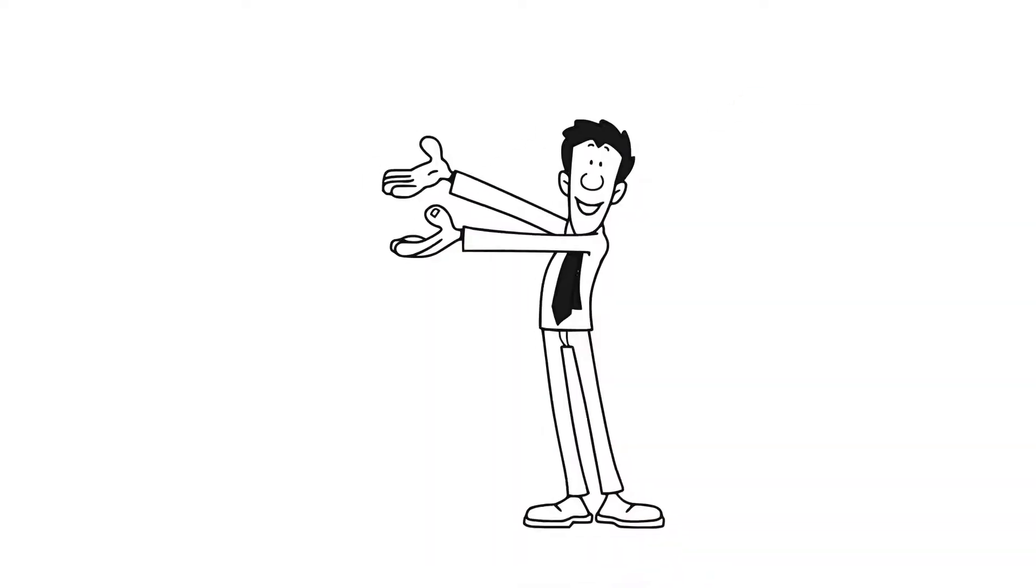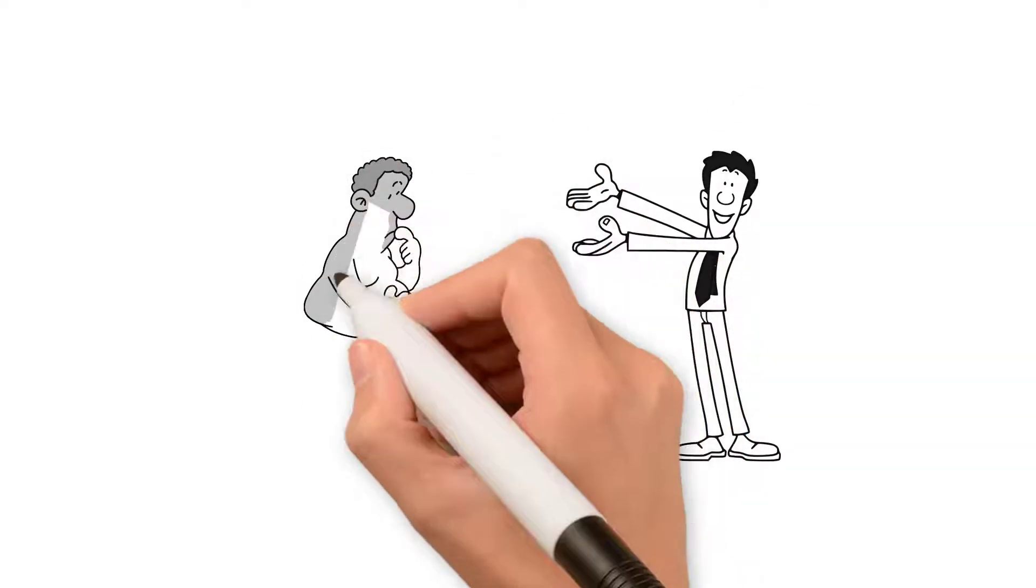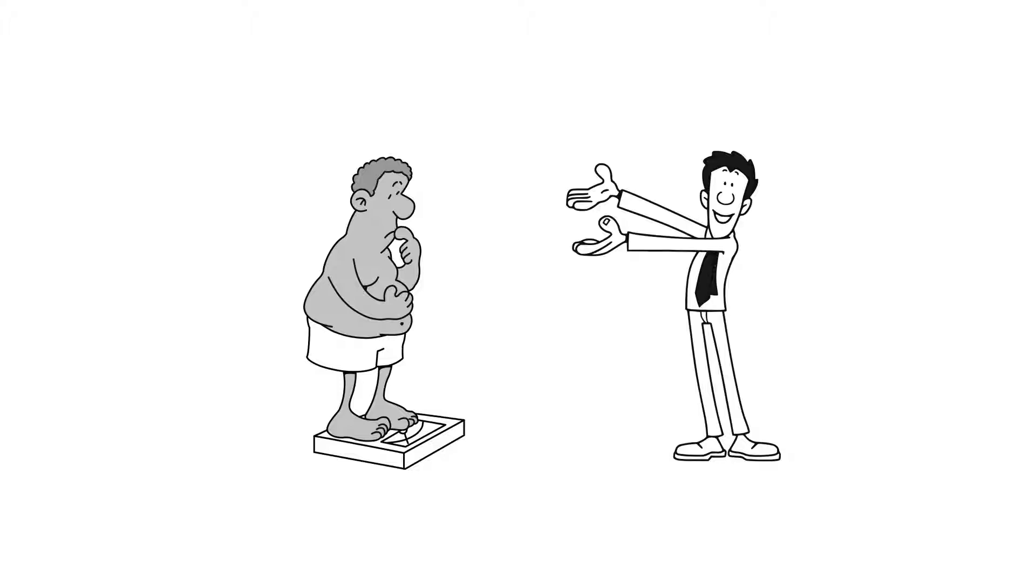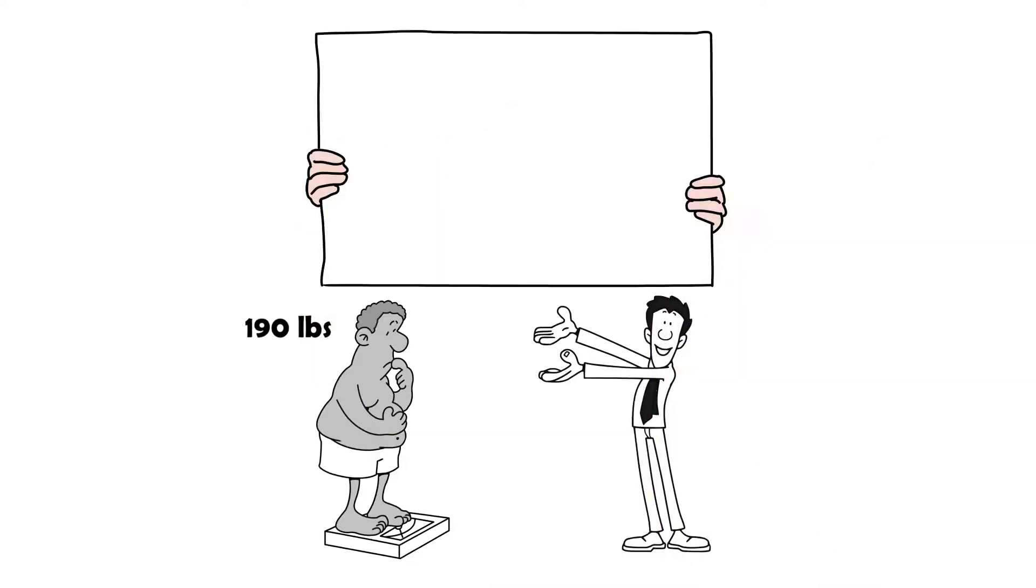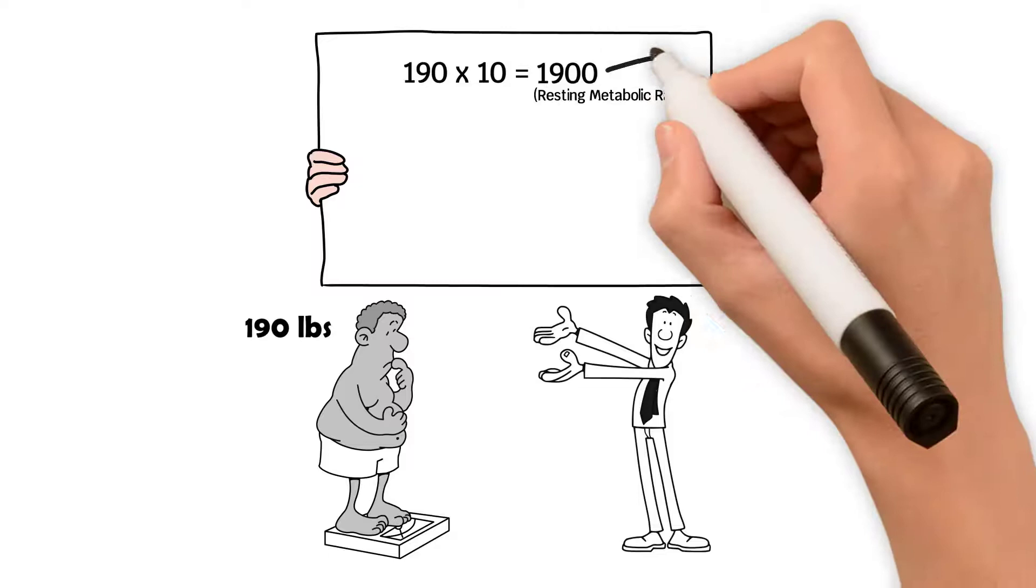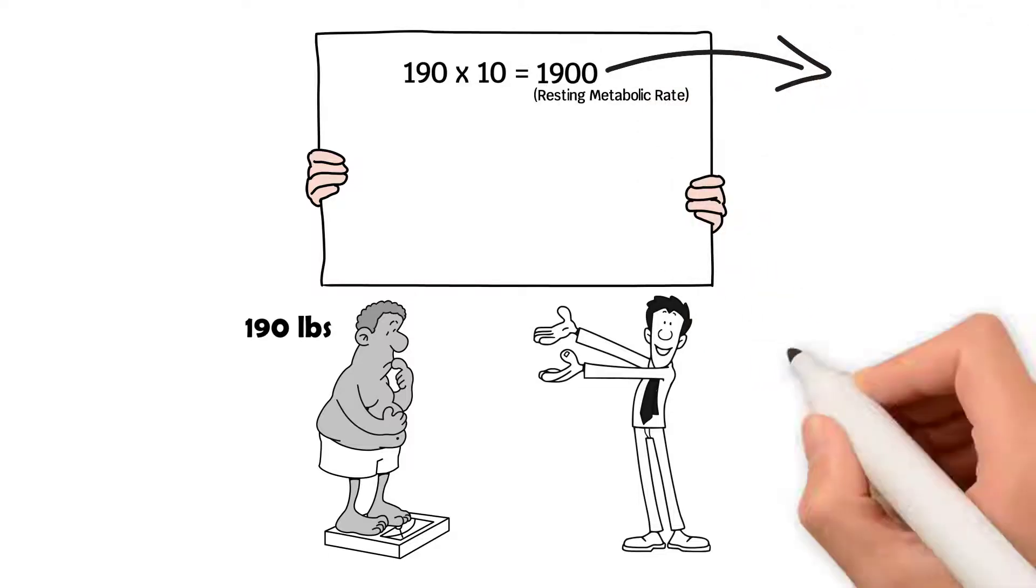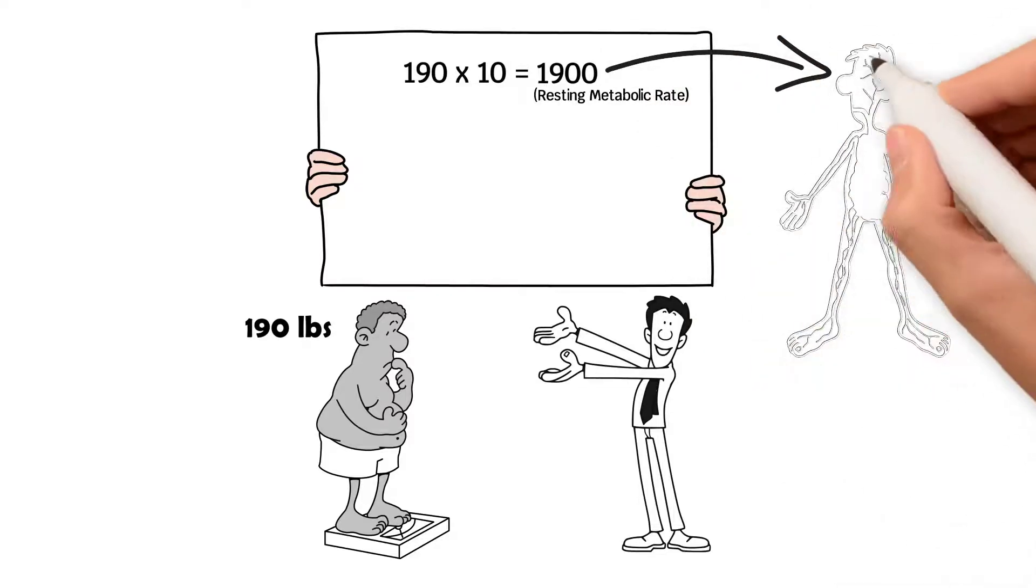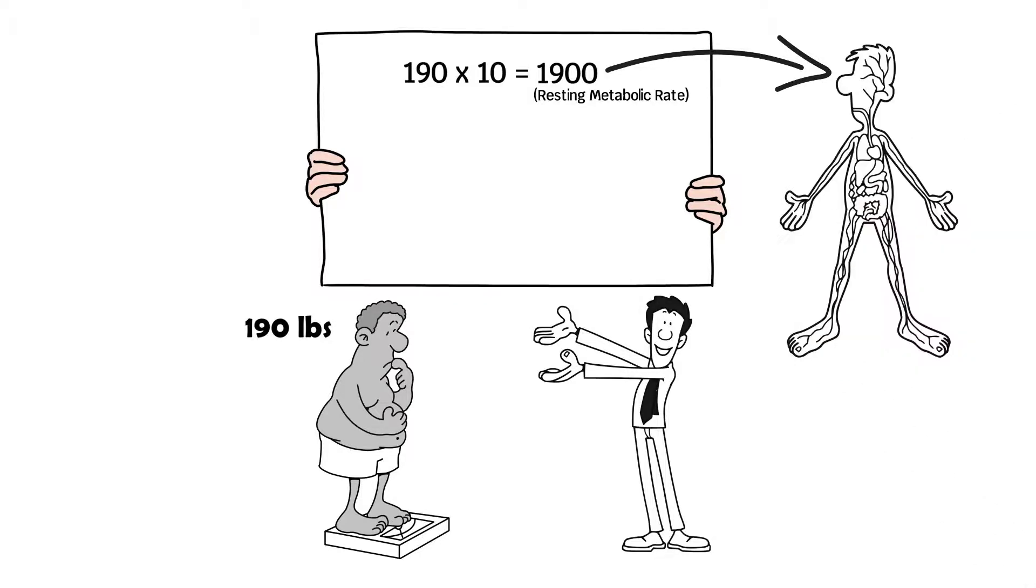When looking to figure out your BMR, an easy way to do this is to take your body weight. I'm going to use 190 pounds as an example. Multiply it by 10 and that'll give you your around about resting metabolic rate. So this would be 1900 calories. This would be just to maintain body functions at rest like breathing, heartbeat, and brain function at total rest and asleep.